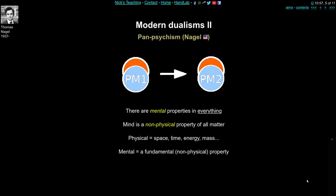Thomas Nagel has a famous article called 'What is it like to be a bat?' — it's quite short, quite fun, and talks about bats and aliens and all sorts of different sensory experiences. From reasoning about bats and other things, Nagel came to the conclusion that everything in nature, everything in the universe, has some sort of mental properties — a sort of micro-consciousness. Everything has consciousness, maybe only a little bit, but everything has it.